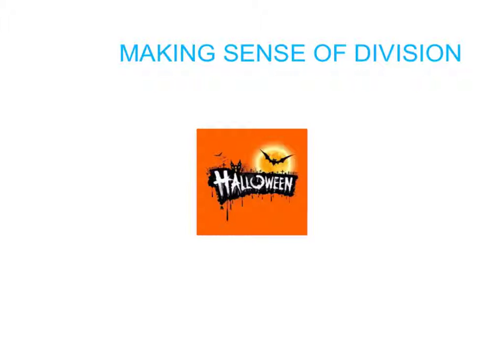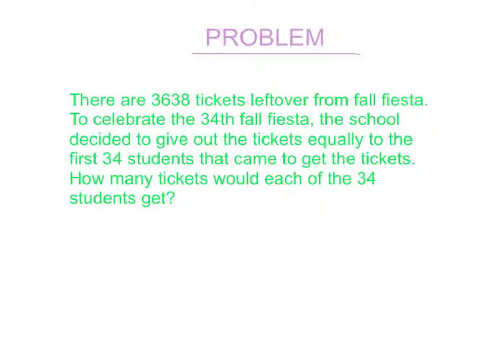Making Sense of Division. There are 3,638 tickets left over from Fall Fiesta. To celebrate the 34th Fall Fiesta, the school decided to give out the tickets equally to the first 34 students that came to get the tickets. How many tickets would each of the 34 students get?